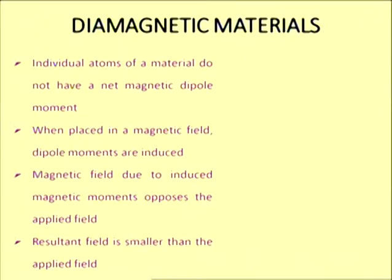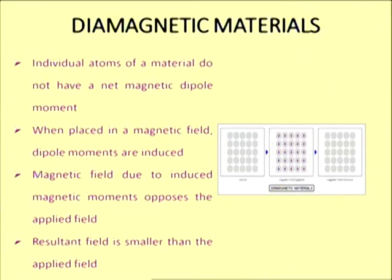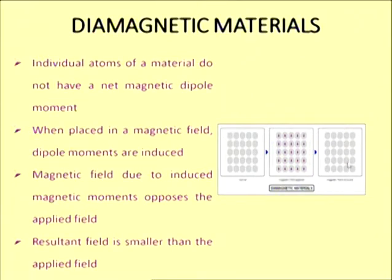So the resultant field is smaller than the applied field. Here is a picture of diamagnetic materials. In the normal case, each atom has zero net dipole moment. But when we apply a magnetic field in a certain direction, the magnetic moments are induced in the direction opposite to that of the applied magnetic field — the material is magnetized in the direction opposite to the applied field. And when we remove this external magnetic field, again this induced orbital magnetic moment disappears and the material is said to be demagnetized.